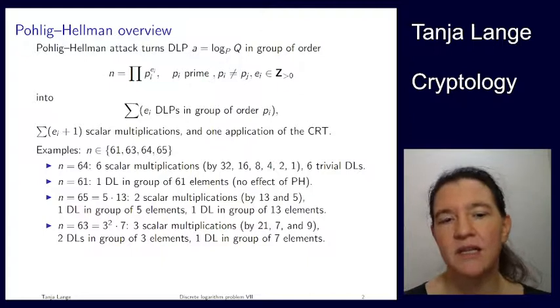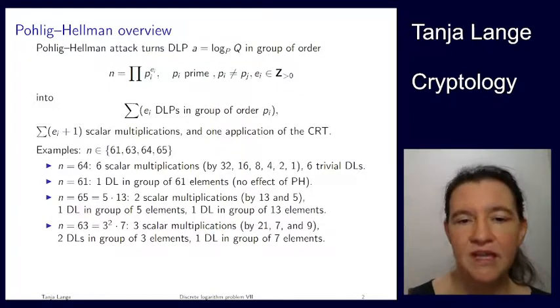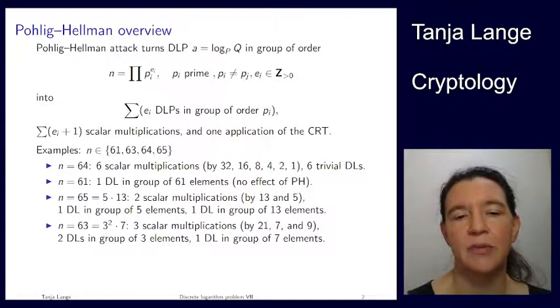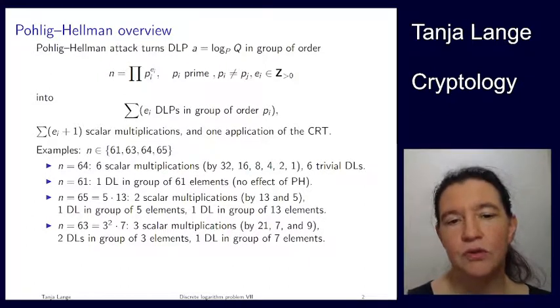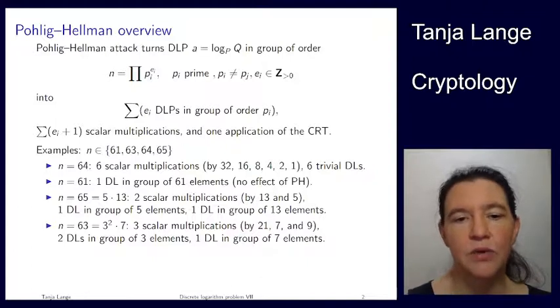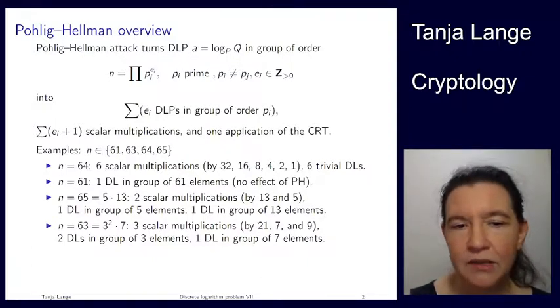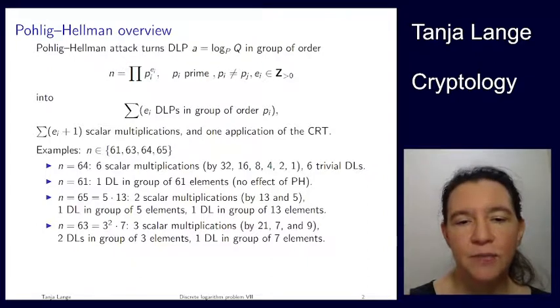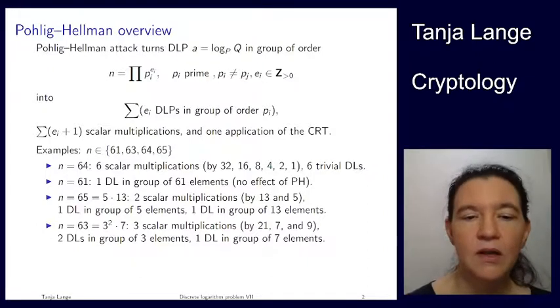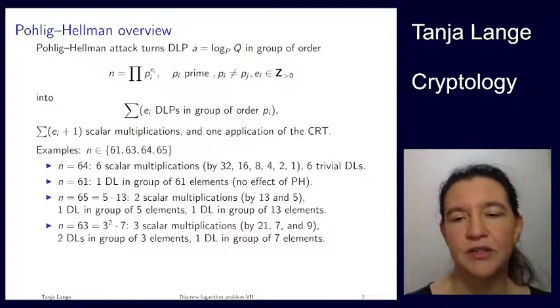And then another example that is closer to the running example I've written in the last slide, where we have one of them appearing twice. So 63 has small discrete logs. So we have to do two discrete logs in a group of three elements, one discrete log in a group of seven elements, and then this should have been two more, so five scalar multiplications.